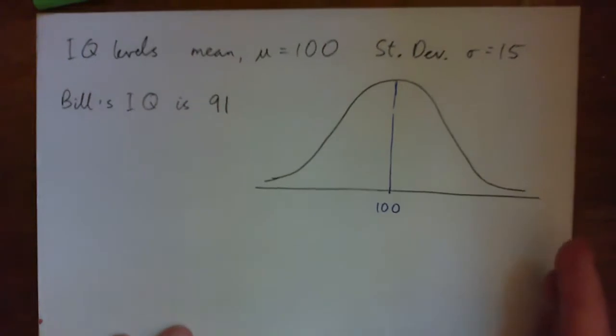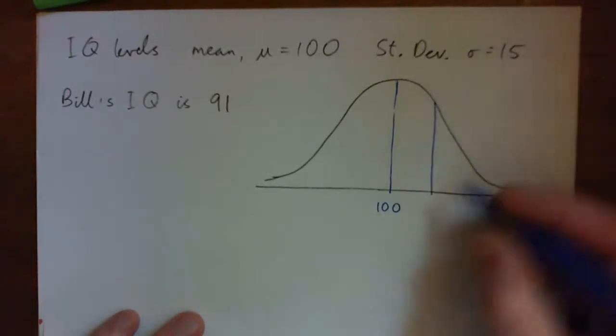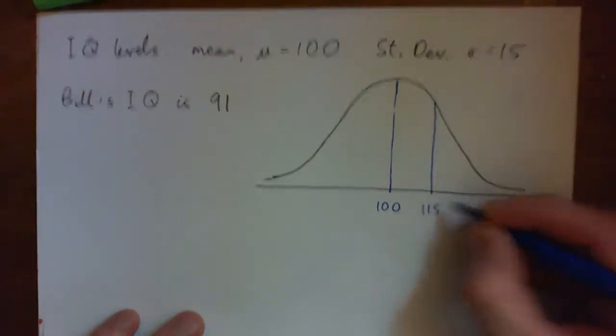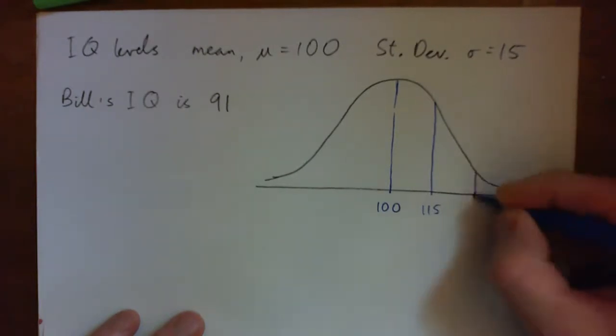The standard deviation is 15, and I'm just for fun, I'm just going to throw this out. So if we go up one standard deviation, it's 115. If we go up two standard deviations, we get to 130, right?